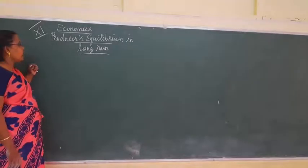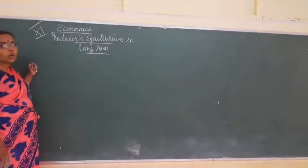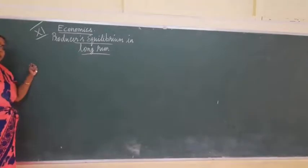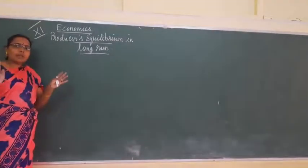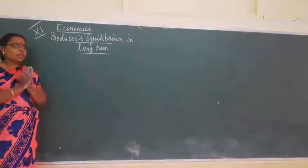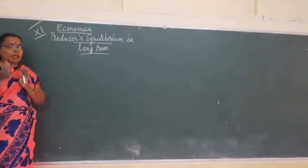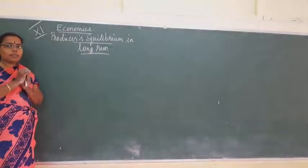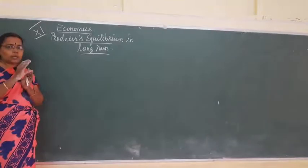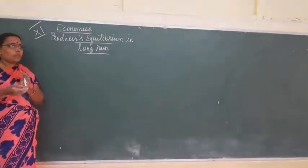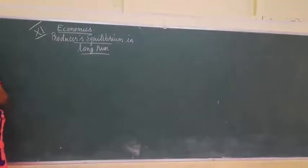Now we are going to study how producers get equilibrium in the long run. As I said, during the short time period, all other factors are fixed. Only one or two factors can be variable; the remaining factors will be constant. So in the short run, demand can be changed, but supply cannot be changed.